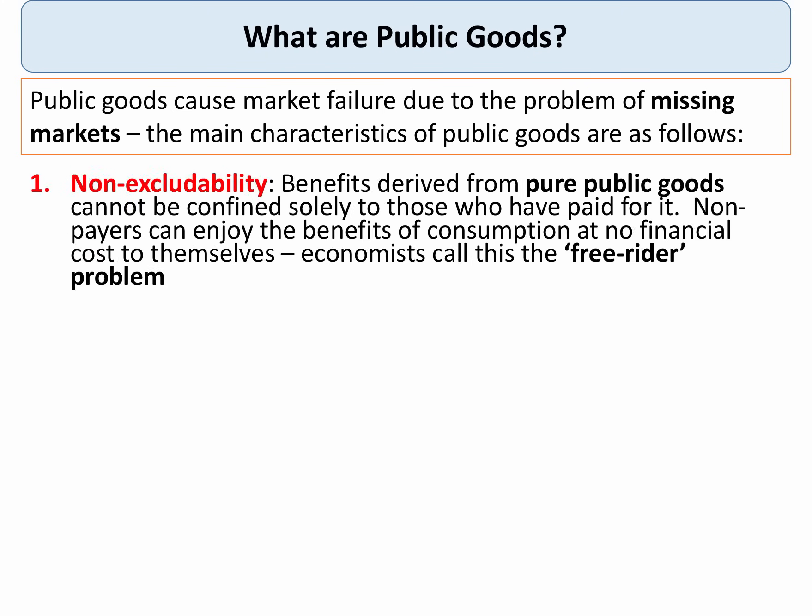Public goods have three main key characteristics. They're the opposite of private goods and services. The first characteristic is non-excludability, and this means that the benefits derived from a pure public good cannot be confined solely to those who have paid for it. Non-payers can actually enjoy the benefits of consumption as well at no cost to themselves — we call that the free rider problem.